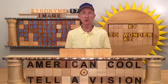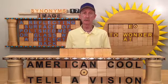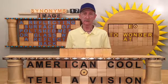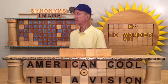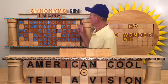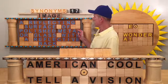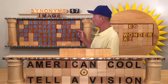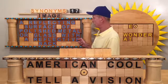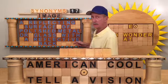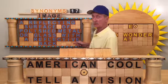Hi, my name is Will Carpenter and I'd like to welcome you to American Cool Television. Today's word's definition: a reflecting surface of polished metal or glass with a reflective back. I'll bet you know what word we have today.